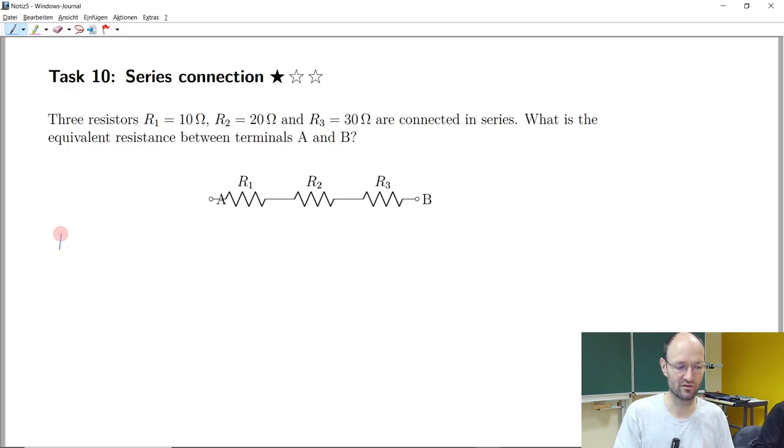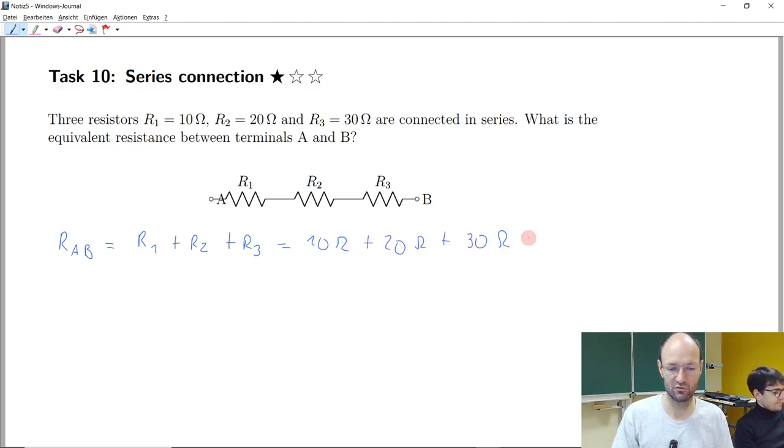And I will call this equivalent resistance R_A_B because it could be measured between these two terminals. Another question is how would you calculate this? Just the sum, so it should just be R1 plus R2 plus R3. And if we insert these values, it should be 10 ohm plus 20 ohm plus 30 ohm. And of course the values are chosen in a way that it's quite simple to calculate them in your head. So the total resistance should be 60 ohm.